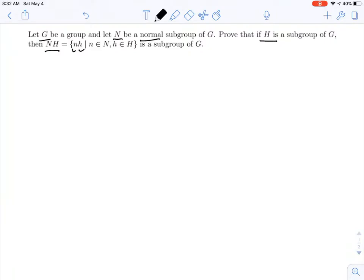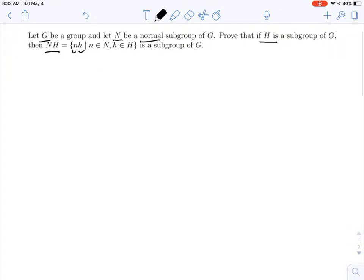So how do we do that? How do we prove it's a subgroup? So three things. First thing, we want to show that the identity element is an element of this product subgroup.